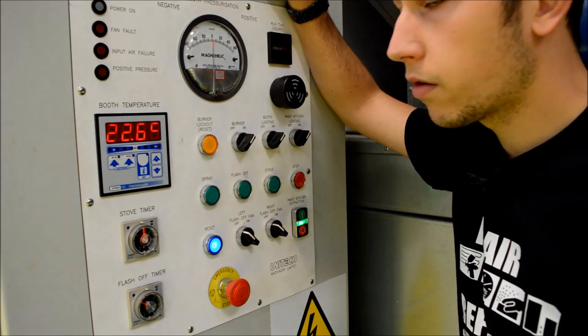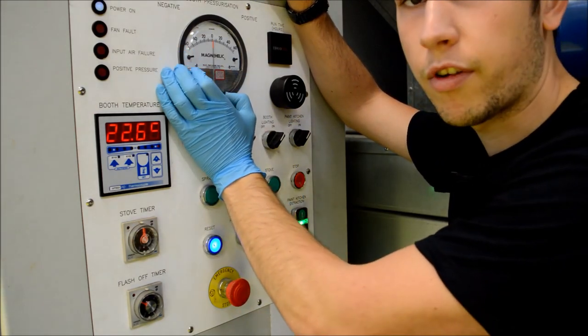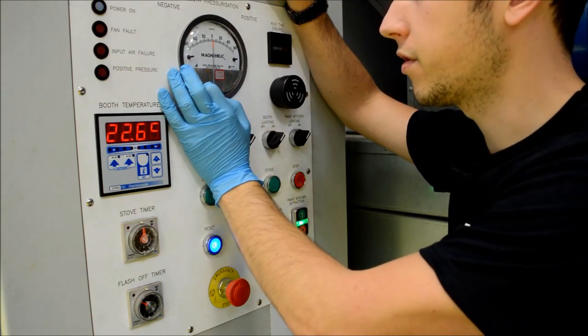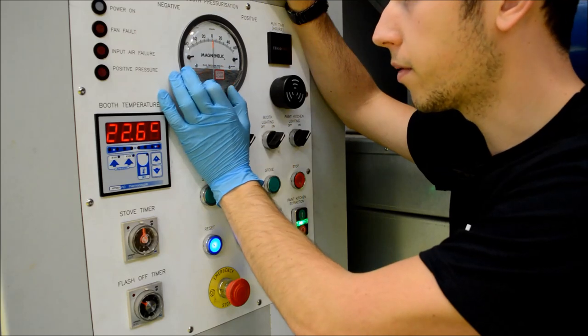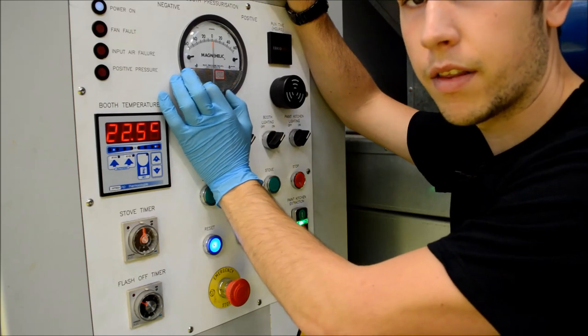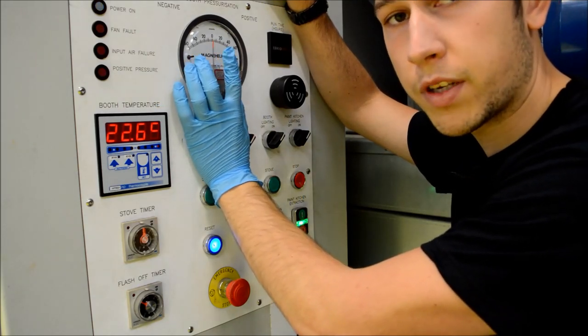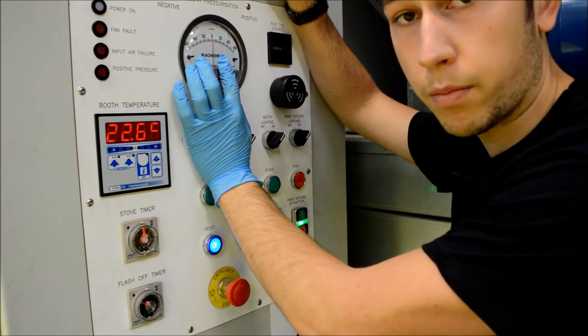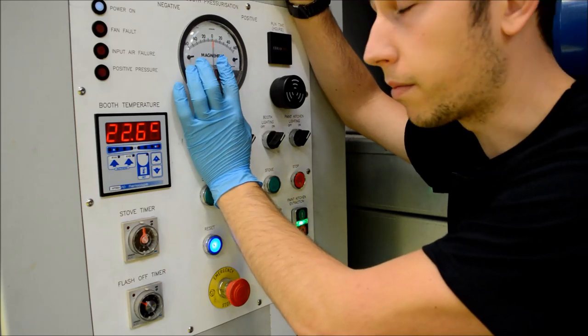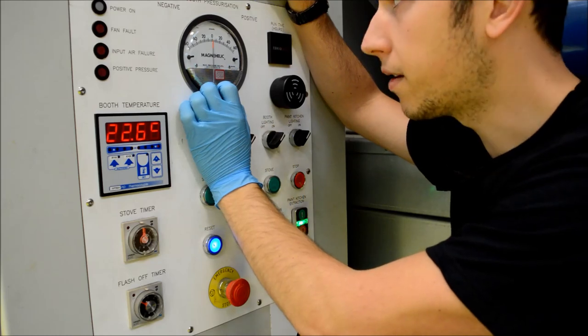So we'll just take a look at the magma helic gauge, and basically this shows you where we're at with the booth pressures. We've got a positive and negative pressure on here, and basically you want this pressure to be around minus 10, that's suitable for a spray booth. We don't want it in the positive because when it's positive, the booth doors are going to blow open and we're also going to get fumes from the spraying going into the workshop, which is what we don't want. The pressure in the magma helic gauge is measured in Pascals as well.